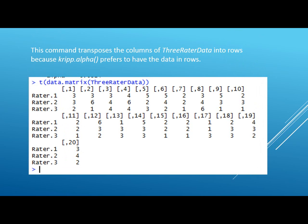This is another way of looking at the data. This command transposes the columns of the three-rated data into rows, because the kripp.alpha command prefers to have the data in rows. You can look at the raters and how the data is transposed.